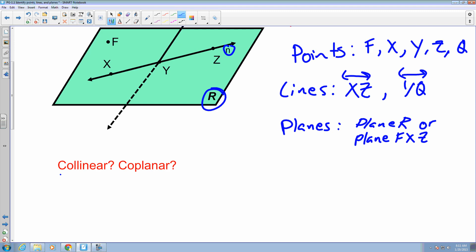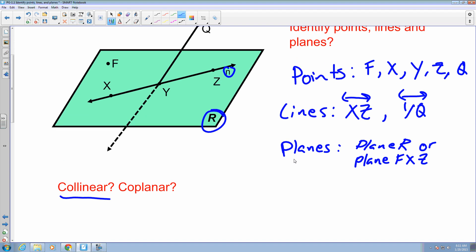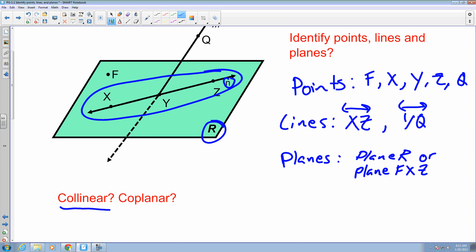Also, let's take a look at some collinear points. Well, let's take a look. So I got a line that's here and I have a line that's here. So looking at the first one, I identified originally line XZ and it looks like the points that lie on that line are X, Y, Z. And then for the other line which is line YQ, the points on that line are Y, Q. So those are my collinear points for this example.